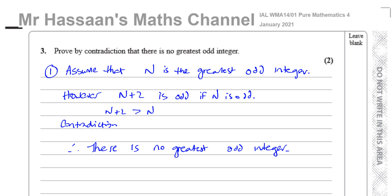And it's greater than it. So therefore, there's a contradiction in our original statement. So we have therefore proved by contradiction that statement. We've proved, basically, that there is no greatest odd integer. That's what we've done. So therefore, we can say this is contradiction. And that's it. That's the two marks for that question. Very simple.